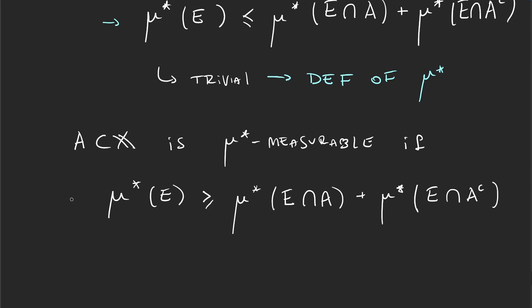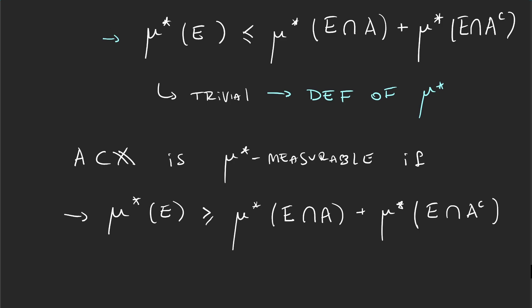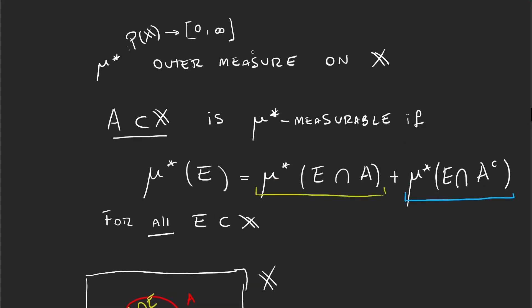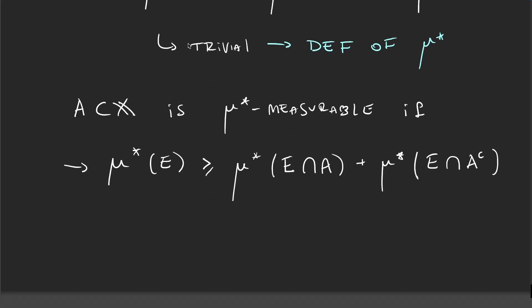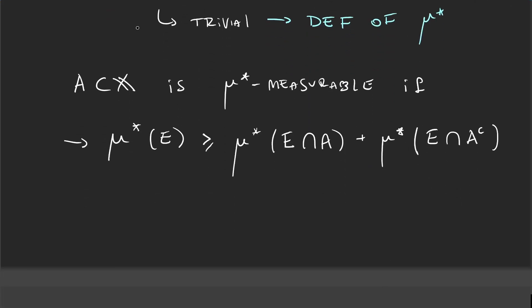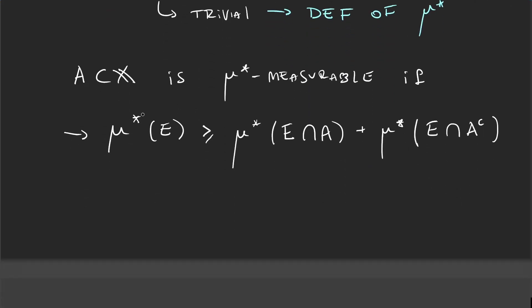Because if this one is valid, as this other inequality is always valid, that would immediately imply this first one. So whenever you have to prove that a set A is μ* measurable, all you have to prove is this one with a greater than or equal to over there.